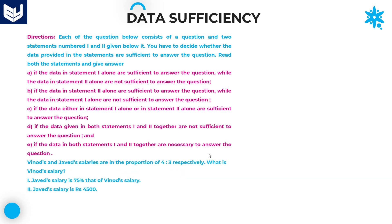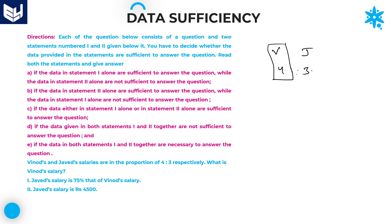Let's move on to the next question. Vinod's and Javid's salaries are in the ratio 4:3. What is Vinod's salary? If you want to find Vinod's salary, you must know at least the total value or Javid's value. Without knowing these two, it is not possible to get the answer. If you know Javid's salary, it is easy to calculate Vinod's salary.